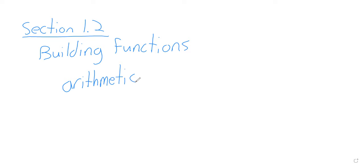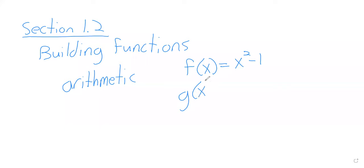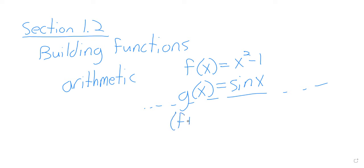So if we have a function f of x equals x squared minus 1, and g of x is the sine of x — we could add these functions together, or divide them, or multiply them, or subtract them. Let's just do two of those things.